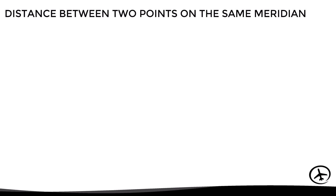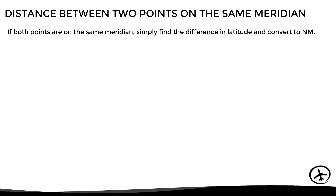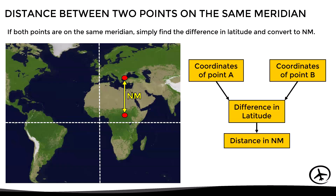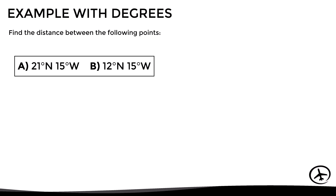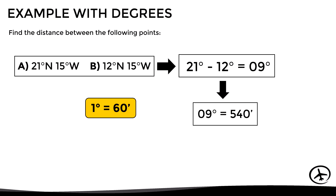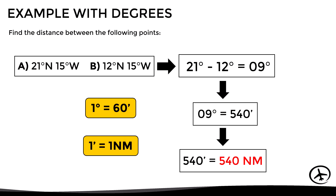A similar procedure applies when both points are located on the same meridian. In this case we just have to determine the difference in latitude and then convert it to nautical miles. Here, both points are on the same meridian, which is 15 degrees west. So to determine the difference in latitude we just subtract the latitudes, obtaining 9 degrees as a result. If we convert 9 degrees to minutes, the result will be 540 minutes. And since on the same meridian 1 minute equals 1 nautical mile, the distance between these points is 540 nautical miles.